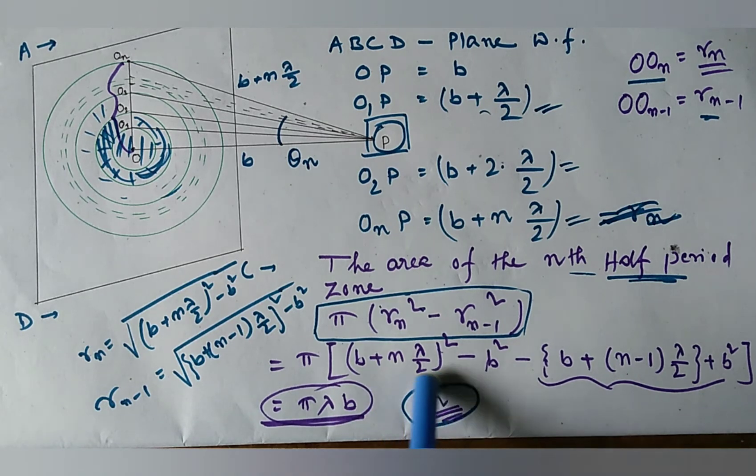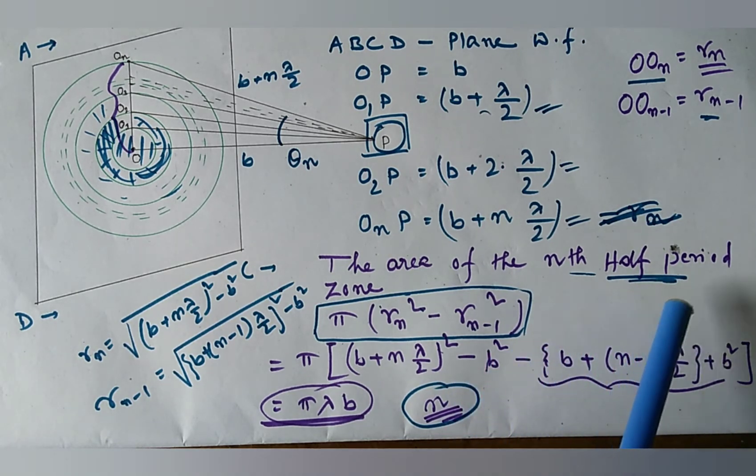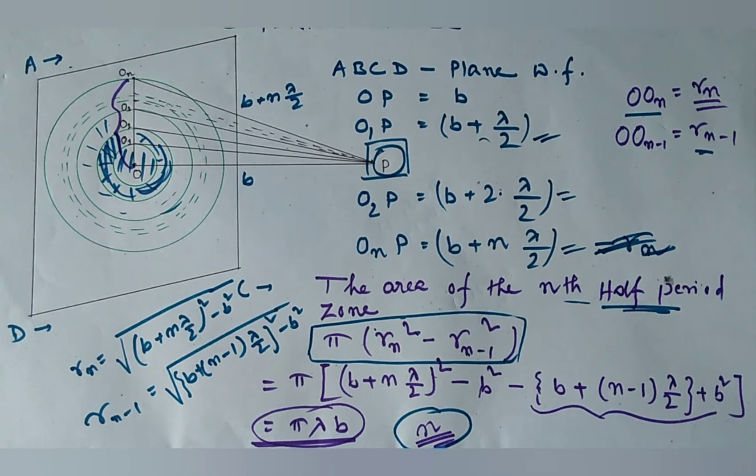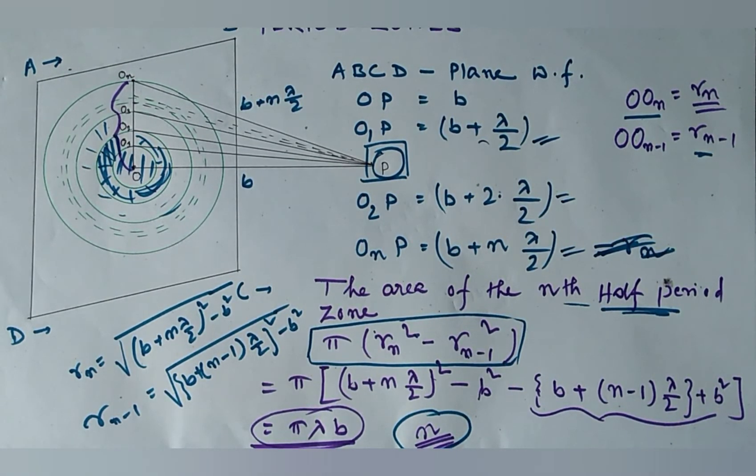we get a simple form as pi lambda B, which is independent of n, the order number. That means the area of each half-period zone is constant, which means the area of each half-period zone is equal.